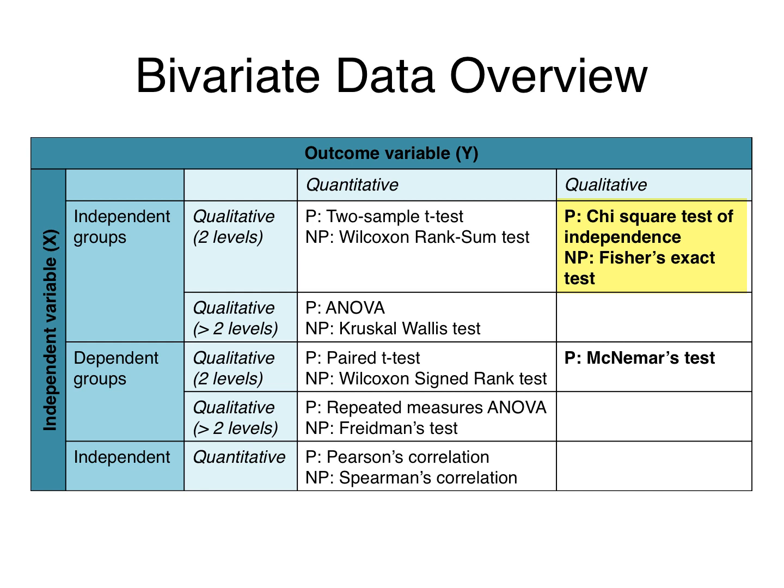But if our assumptions for the chi-square test aren't met, then we conduct the nonparametric alternative, which is Fisher's exact test. If we have two dependent or paired groups for our explanatory variable and our outcome is categorical, we use McNemar's test. We won't learn much about the details of McNemar's test in this course, but the main thing you need to know is that you should use it in this situation.